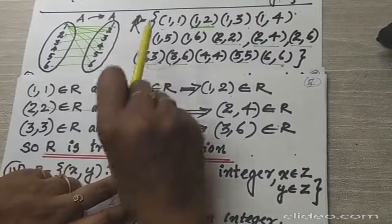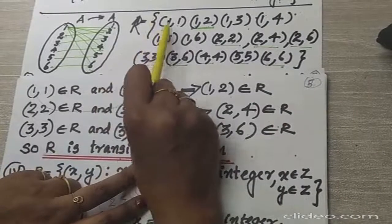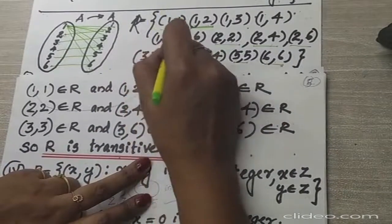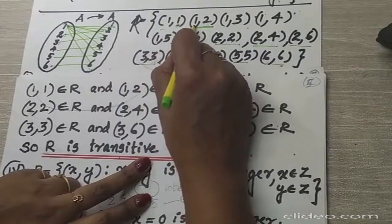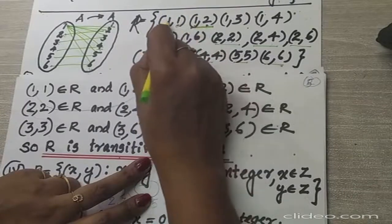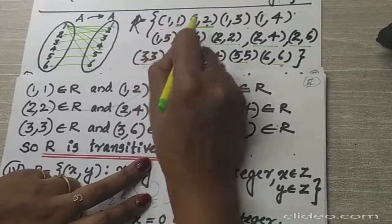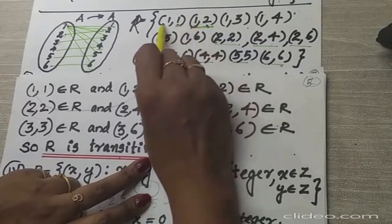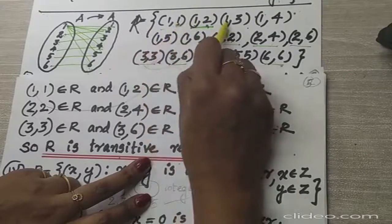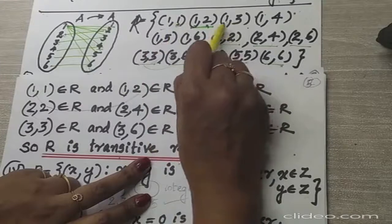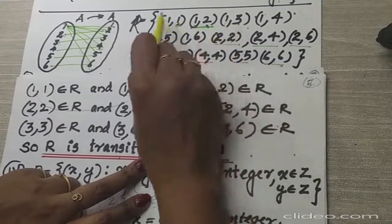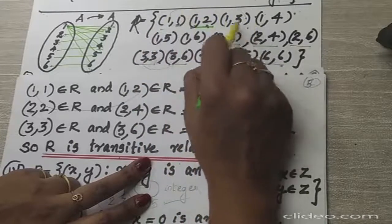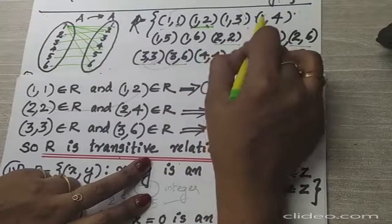Now the next — checking for transitive. (1,1) belongs to the relation. Starting with 1, (1,2) also belongs to the relation, so (1,2) should be there — yes, it is. Also, (1,1) belongs to the relation and (1,3) is there, so (1,3) belongs to the relation — that is also there.